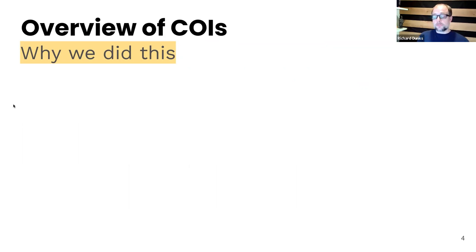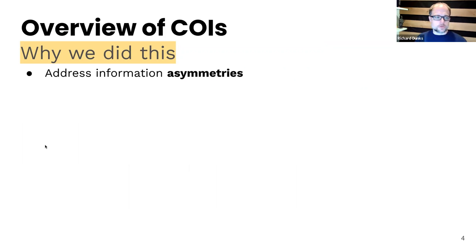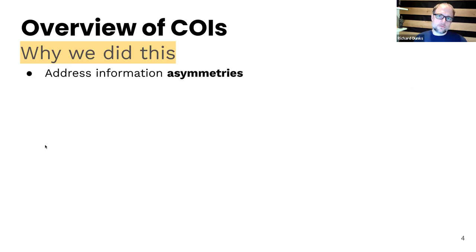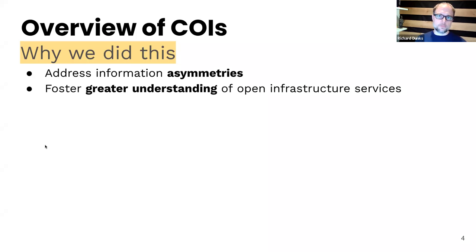Thank you. My name is Richard Dunks, Director of Research and Strategy at IOI. I'm really excited to be talking with you all today about the Catalog of Open Infrastructure Services. For those who haven't been following our blog posts and tweets, I want to give you an overview of COIS — the reason we pursued this work was primarily to address information asymmetries. We heard from people in the space: 'I don't know what services are out there, I don't know what's available, I have this need but I don't know how to meet it.'